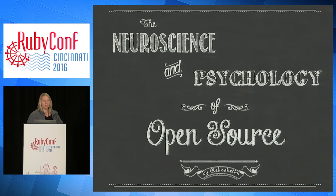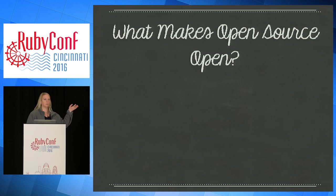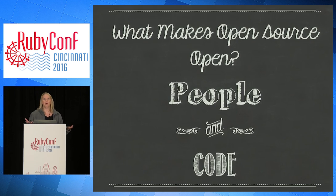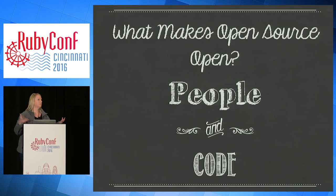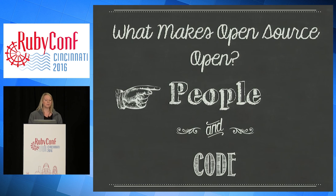So let's get started. What makes open source open? There are basically two components: people and code. Those are the things that come together to make open source. And obviously a lot of talks at RubyConf are about code, so this one's just going to be about people.